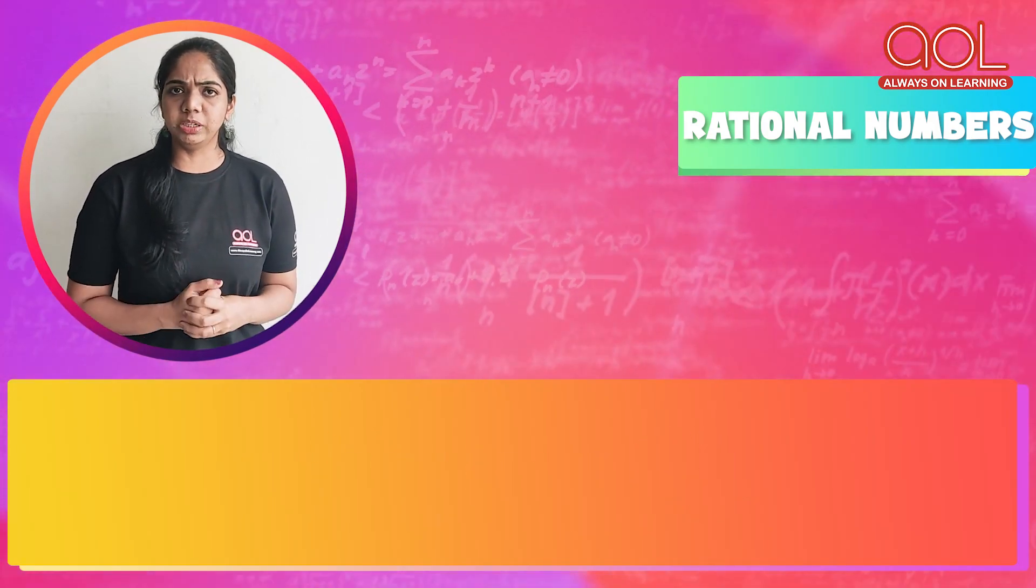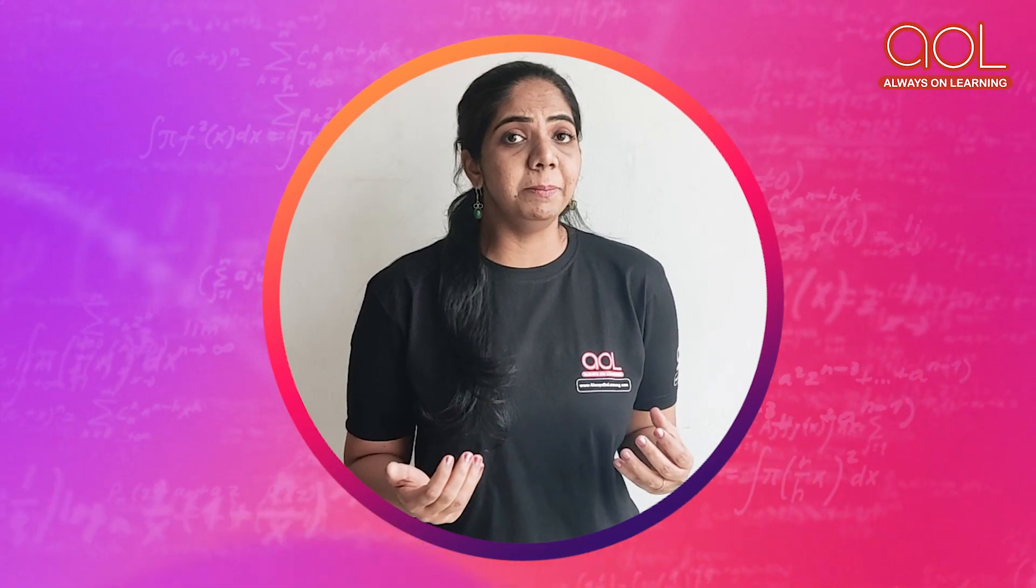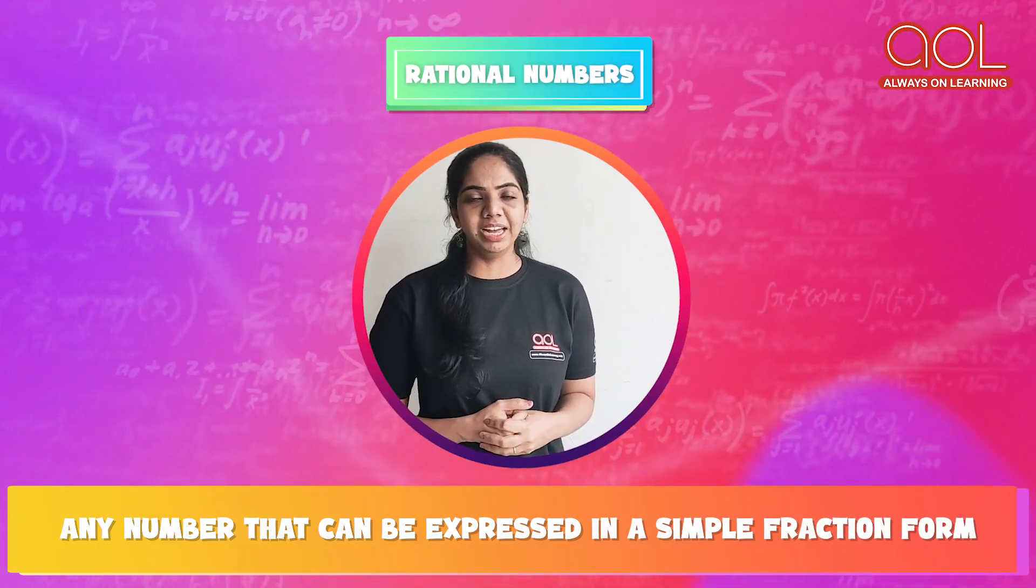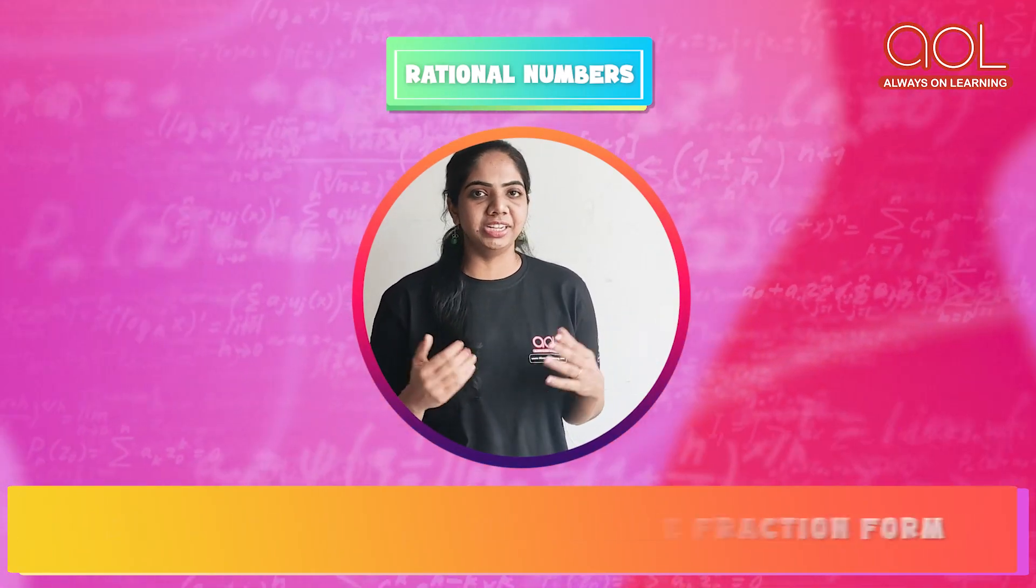Why can't Q be equal to 0? We know any number divided by 0 is undefined. Can you multiply 0 three times to get a value? No. So, any number that can be expressed in a simple fraction form is called your rational number.